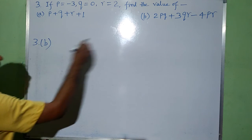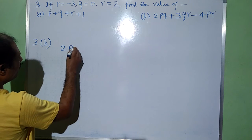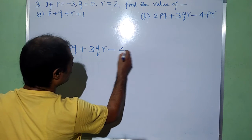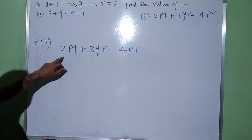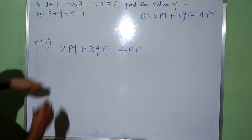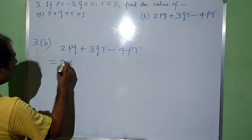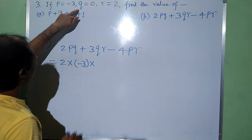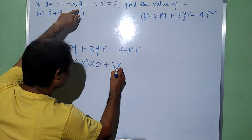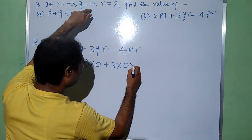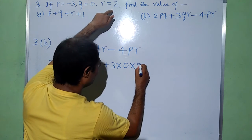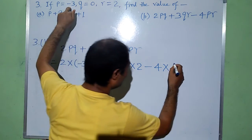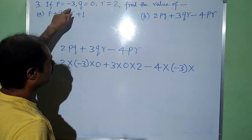Now part b. The algebraic expression is 2pq plus 3qr minus 4pr. It will be equal to 2 times value of p which is minus 3, into value of q which is 0, plus 3 into value of q which is 0, into value of r which is 2, minus 4 into value of p which is minus 3, into value of r which is 2.